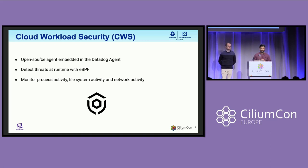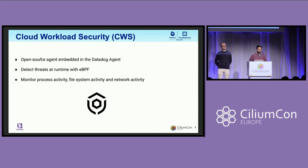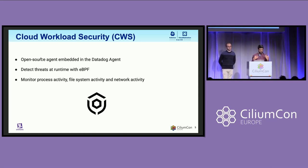Datadog does a lot of things, but the most important ones for this talk are a couple of things. Datadog has a component called Datadog Agent, which runs as a daemon set in Kubernetes clusters. Datadog Agent allows for collecting things like logs, metrics, traces, and other telemetry. Within the Datadog Agent, we also have a product called Cloud Workload Security that allows us to detect threats at runtime using eBPF.